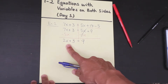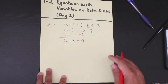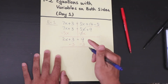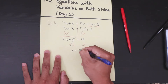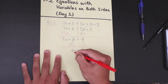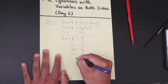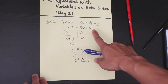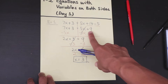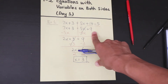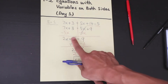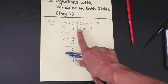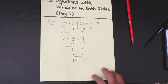Now you have a two-step equation. Subtract 3 on both sides using the subtraction property of equality — that cancels, leaving 2x equals 9 minus 3, which is 6. Then divide both sides by 2, giving x equals 3. That extra step — subtracting the smaller variable term from both sides — is the only new step compared to multi-step equations.